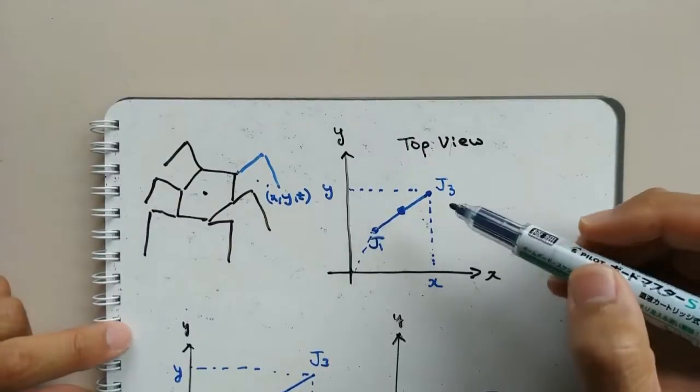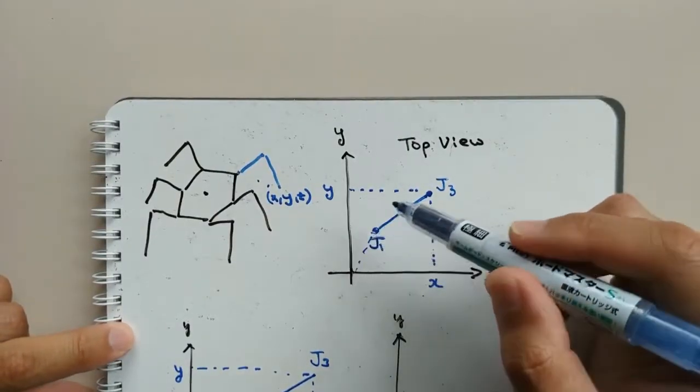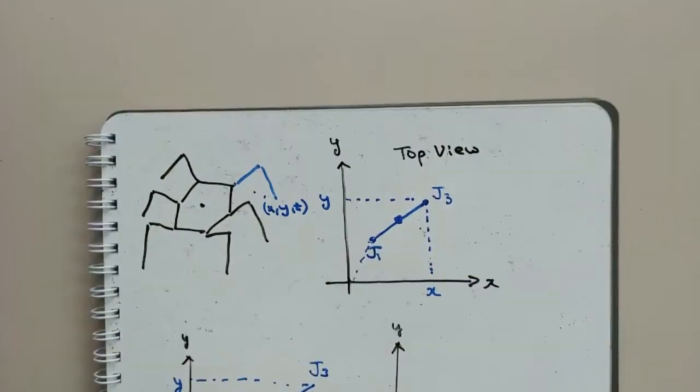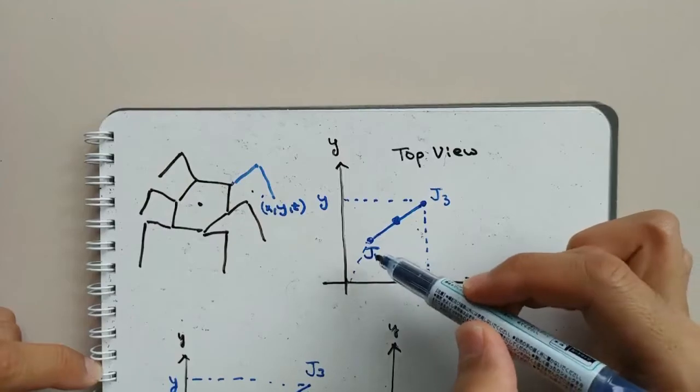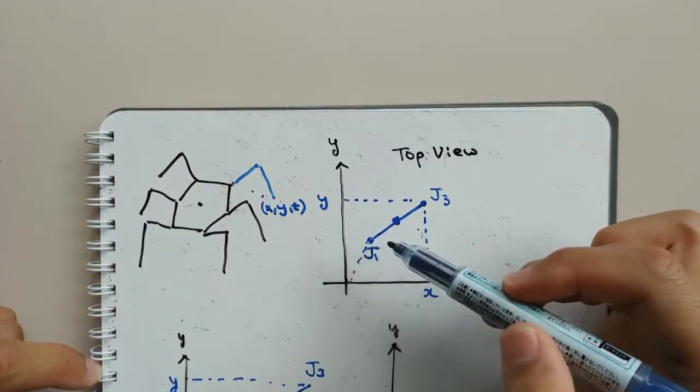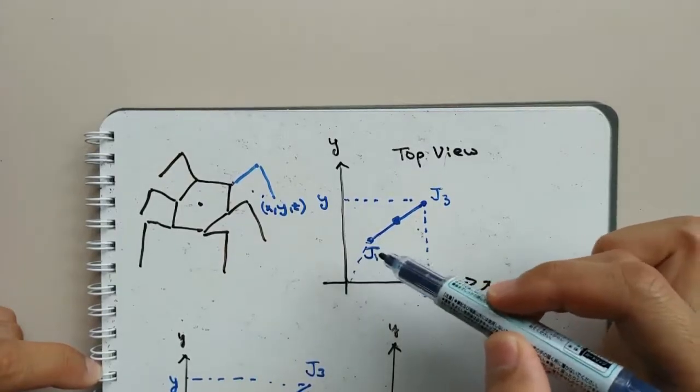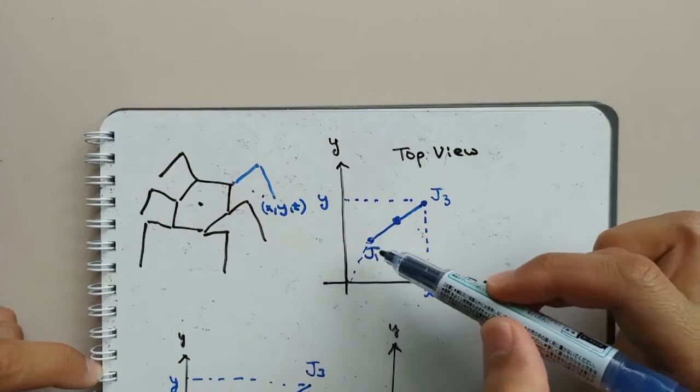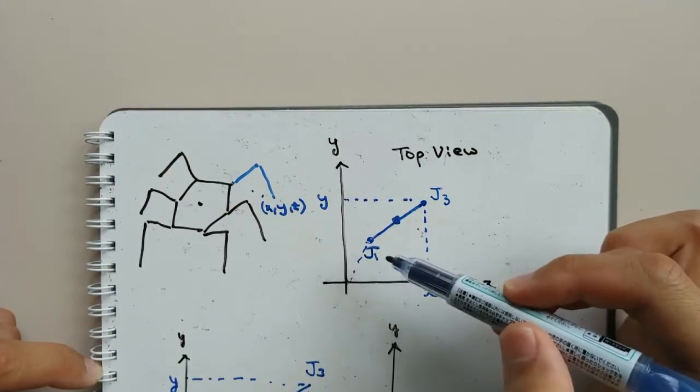Let's start by considering the top-view diagram of this leg. Here we can see there's an offset from the center point to joint 1. Because this offset will become inconvenient in our calculations, we start by removing the offset.